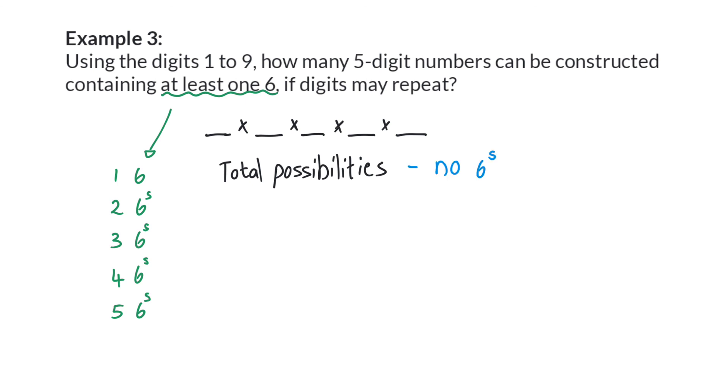Because the digits may be repeated, the total number of possibilities will then be 9 to the power of 5. And to contain no 6s means we have the digits 1 to 9 without the option of a 6 to choose from.